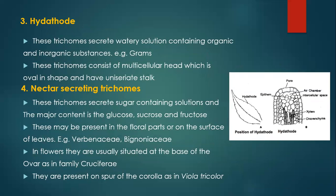Hydathode trichomes secrete water solutions containing organic and inorganic substances. For example, in some plants these trichomes consist of a multicellular head which is oval in shape and a unicellular stalk. In nectar-secreting (ecto-secreting) trichomes, these secrete sugar-containing solutions — the major contents being glucose, sucrose and fructose. These may be present in the floral parts or on the surface of the leaves, for example in the family Verbenaceae. In flowers, they are usually situated at the base of the ovary, or in the family Cruciferae, present on the spur of the corolla.